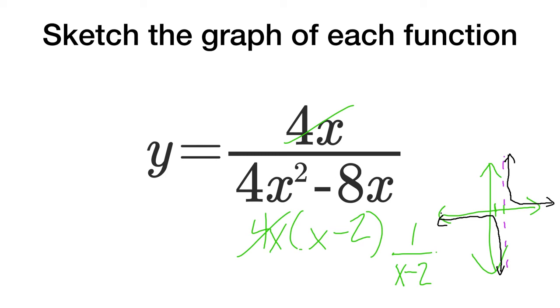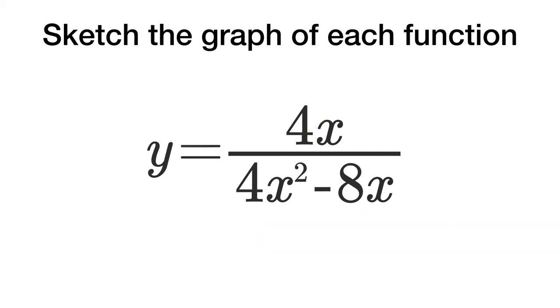Now, the only thing that I have to deal with here is my other point, which is my removable discontinuity. And so, for x equals 0, that means x equals 0 right there.